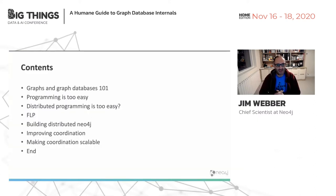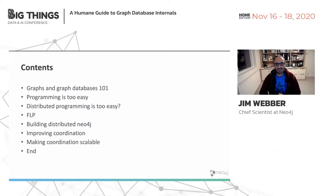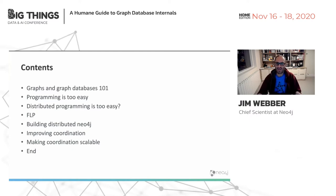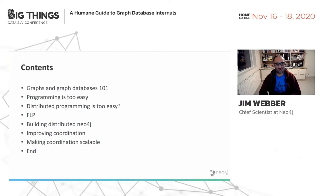This talk is going to be pretty quick and pretty hard-hitting. I'm going to tell you in a few slides how graphs work and how graph databases work. I'm going to insult you by saying that programming is too easy and that distributed programming is too easy — which of course is not true. We're going to talk about distributed systems theory, in particular the trade-off between reliability and availability, and how that might help us build a distributed version of Neo4j with good characteristics for scale, safety, and availability. As it happens, all of these things are in competition with each other.